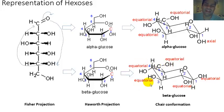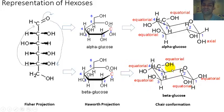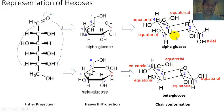We tend to believe the beta anomer of glucose is the most stable form. By natural abundance, this is 63%; the alpha form is about 33%, and the linear form is about 1% natural abundance. Remember, as you go from the alpha to beta form, you have to transit through a hemiacetal intermediate.